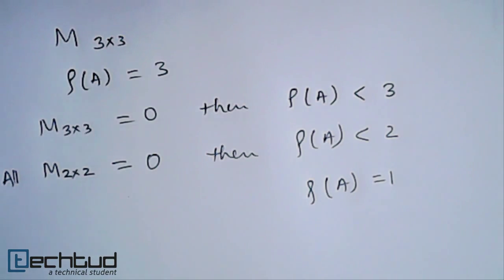Gradually, we will decrease the size of minor and we will check whether there exists a non-zero minor. If a non-zero minor exists, we will say that is the rank of matrix. So this is the process of finding out the rank of matrix.